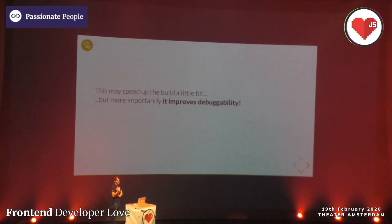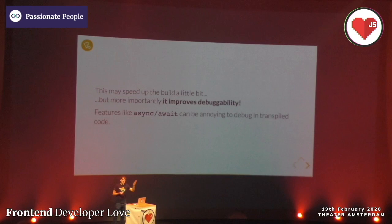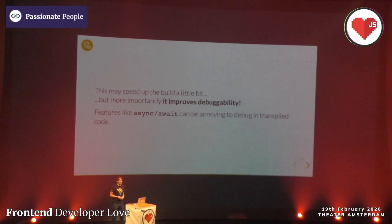This may speed up the build a little, but more importantly it improves debuggability. When you're debugging and using async/await a lot, it's really annoying because the browser is doing a lot more behind the scenes. But if you don't transpile async/await in modern browsers, source maps only show you the async/await functions and debugging is much more fun. I think that's one reason why a lot of people still use console.log for debugging - because it's not fun with source maps.